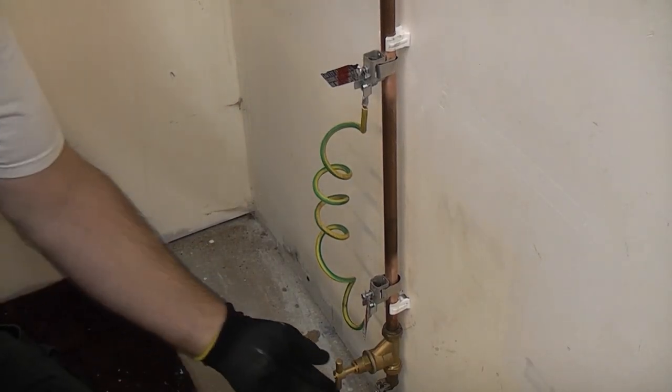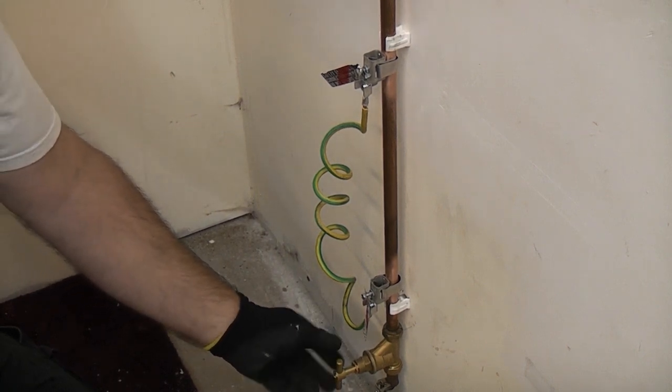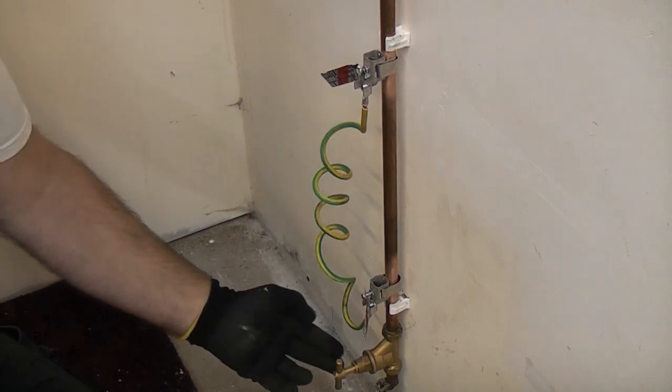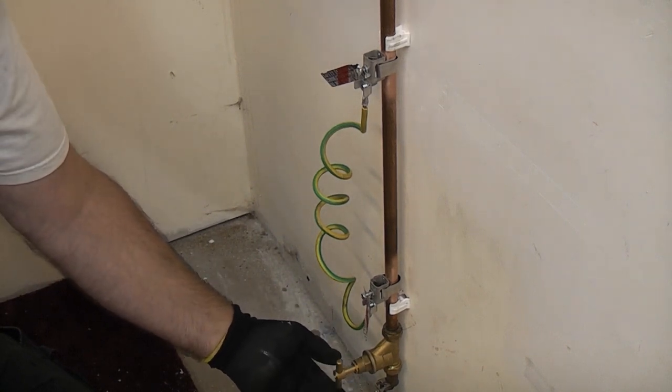First thing we're going to do is isolate the water supply. We can actually do this here because this stop tap is actually working. If this one is actually seized you may have to go and isolate the water in the street.